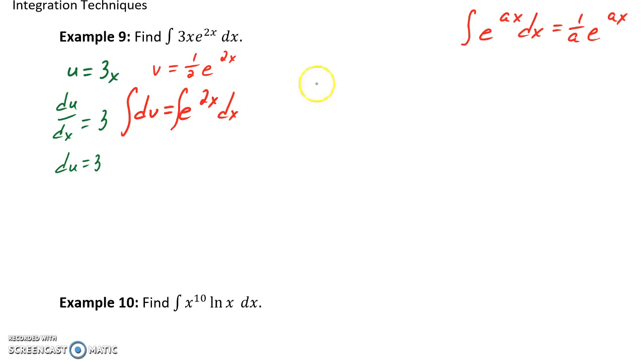Now we can set up our integration by parts statement. It would be u, which is 3x, times v, which would be 1 half e to the 2x, minus the integral of our statement for v, so 1 half e to the 2x times du, which in this case would be 3 dx. So we just plugged in those pieces for the formula we stated above based off these substitution statements we just set up.